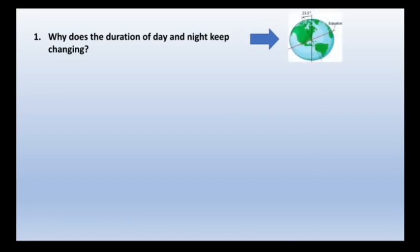There will be some questions based on what you have already learned. The first question is, why does the duration of day and night keep changing? The earth is tilted at an angle of 23.5 degrees. Therefore, the duration of day and night keeps changing.